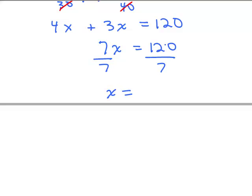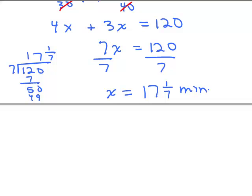Now, let's write 120 as a mixed number. So you just divide 7 into 120, and that goes 1, 7, and then that's going to be 49. Your remainder is going to be 1. So it's 17 and 1/7th. Now, what did x really stand for? It stood for their time, so minutes.